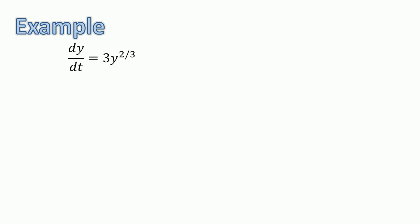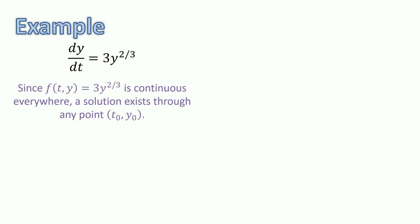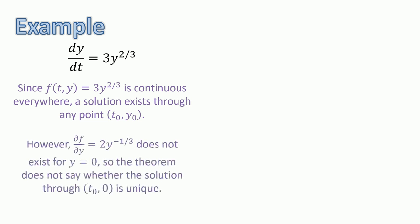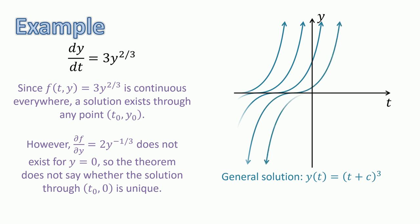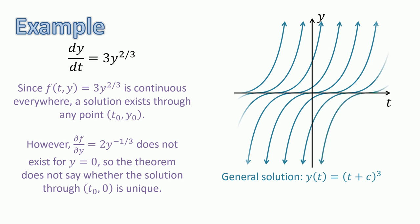We conclude with one more example. Consider the differential equation dy/dt equals 3y to the 2/3. Since the right-hand side, f(t, y) equals 3y^(2/3), is continuous everywhere, a solution exists through any point (t0, y0). However, the partial derivative of f with respect to y is 2y^(-1/3), which does not exist when y equals 0. So the theorem does not say whether a solution through a point (t0, 0) is unique. We find that the general solution is y(t) equals (t plus c) cubed for some constant c, yet there is also an equilibrium solution y equals 0. Thus, there are two solutions through each point where y is 0, and so the solution through any point on the t-axis is not unique.